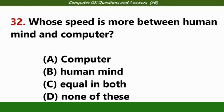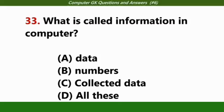Whose speed is more between human mind and computer? Answer B, human mind. What is called information in computer? Answer C, collected data.